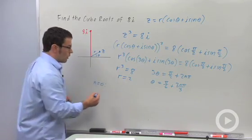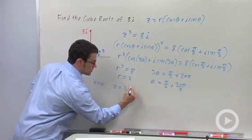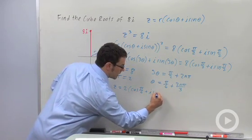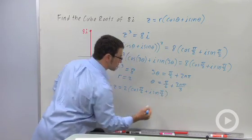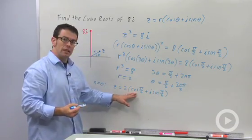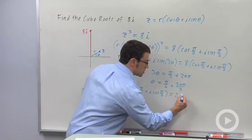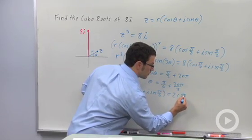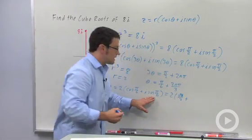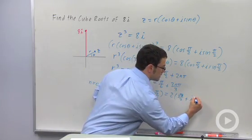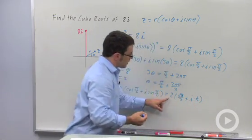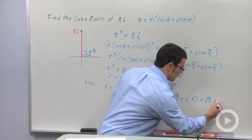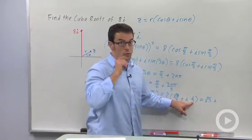So, one root will be z equals the modulus of 2 times cosine of pi over 6 plus i sine pi over 6. Cosine of pi over 6 is root 3 over 2. So this is 2 times root 3 over 2, plus sine of pi over 6 is 1 half, so i times 1 half. 2 times root 3 over 2 is root 3. 2 times 1 half is 1, so I get i.